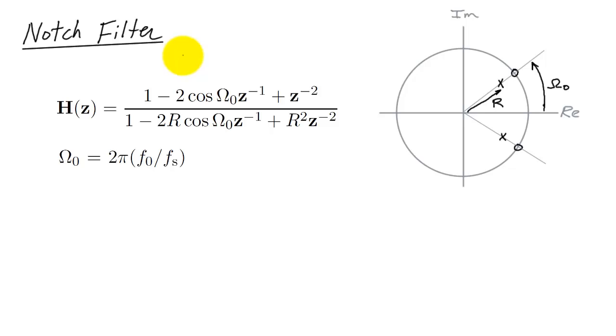For this example, I'll be using a notch filter. Its transfer function, or system function, H of Z, looks like this. The pole zero diagram is based on a pair of zeros. The zeros are on the unit circle at an angle of theta naught, and we also have a pair of poles at the same angle but at a radius r.